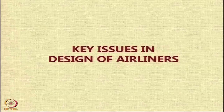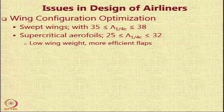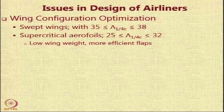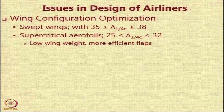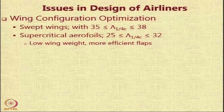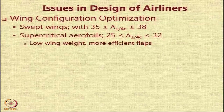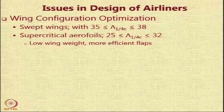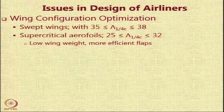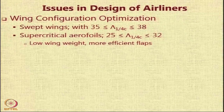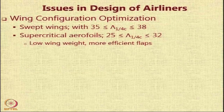Let us look at some key issues in the design of an airliner. The wing of a transport aircraft or an airliner is subject to a large amount of optimization. Many people wonder why all airliners, whether they are from Boeing or Airbus, look very much alike — because both have been subjected to the same optimization, similar requirements, and similar objectives.